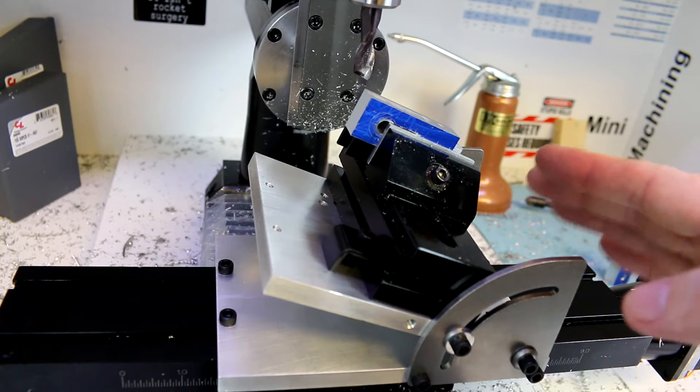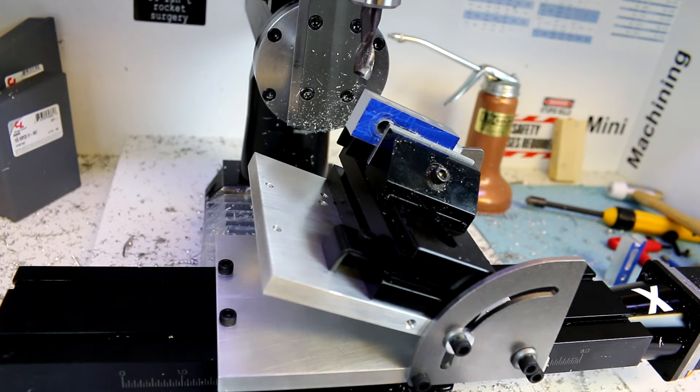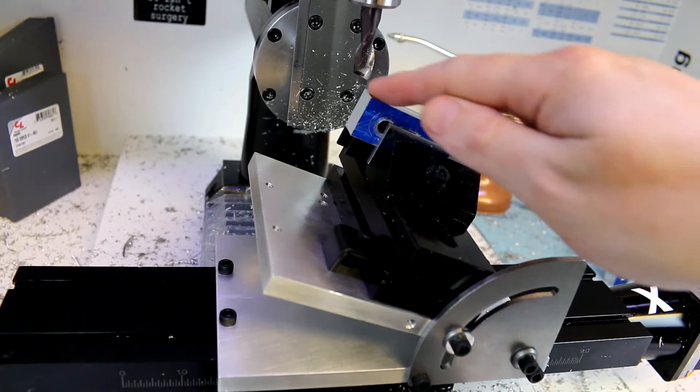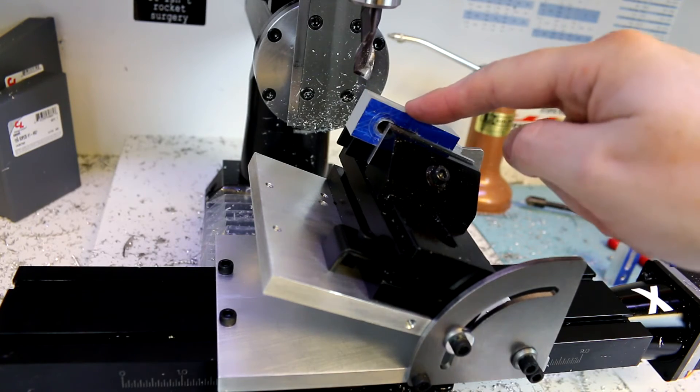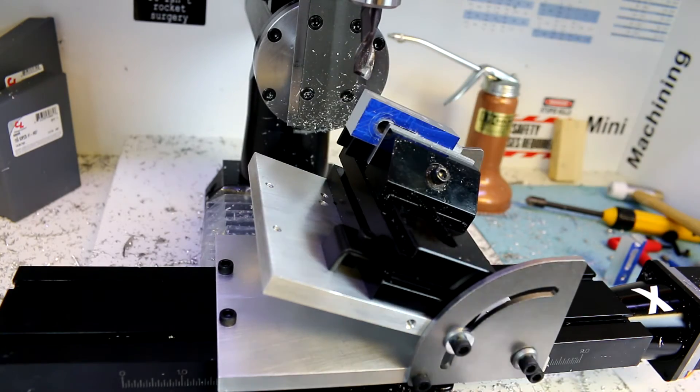And then we'll also look at some stops and other things that will do some modifications to the vise to make our lives a little bit easier in this regard. But now we can repeatedly cut this 20-degree angle very securely in the vise quite easily.